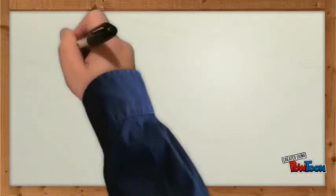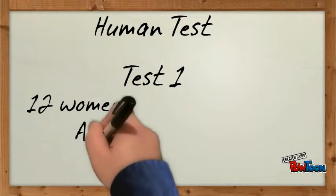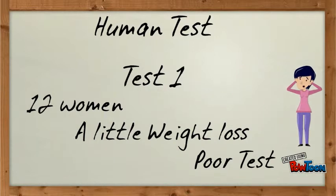Let's see what happens with humans. There have been three tests so far in humans, and we're going to go through each one. The first test took 12 women and gave them Forskolin for about 12 weeks. They found there was actually a little bit of weight loss. Unfortunately, this test was just a starter test and had absolutely no controls in it, so we don't really count that as working.